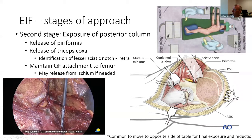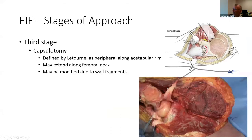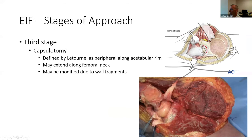The lateral position makes it more challenging to access the very caudal portion of the approach—the cranial aspect of the ischial tuberosity—and to get palpation or clamp access onto the quadrilateral surface. Finally, the capsulotomy can be performed. Letronel described a peripheral rim capsulotomy for visualization of the reduction; you can be more extensive as long as you don't devascularize the cranial portions of the anterior column. You can also sublux the joint to examine the reduction of the inner aspect. This can be modified if there are wall fragments to move out of the way.